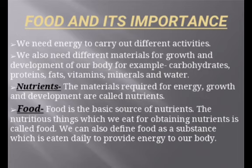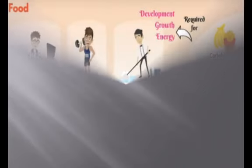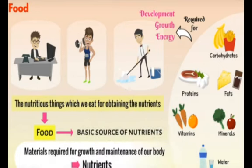Now what is food? Food is the basic source of nutrients. The nutritious things which we eat for obtaining nutrients is called food. We can also define food as a substance which is eaten daily to provide energy to our body. So food is required for development, growth, and energy. Nutrients are the materials required for growth and maintenance of our body, like carbohydrates, proteins, fats, vitamins, minerals, and water.